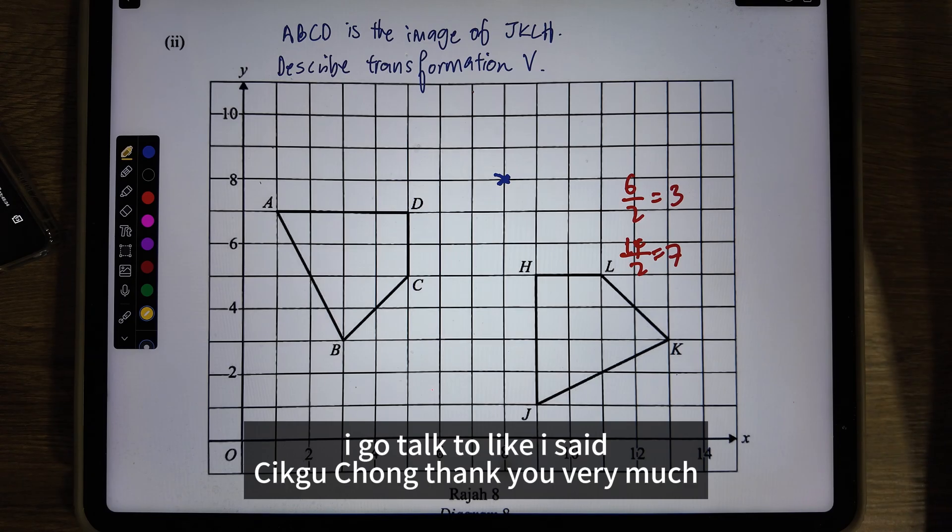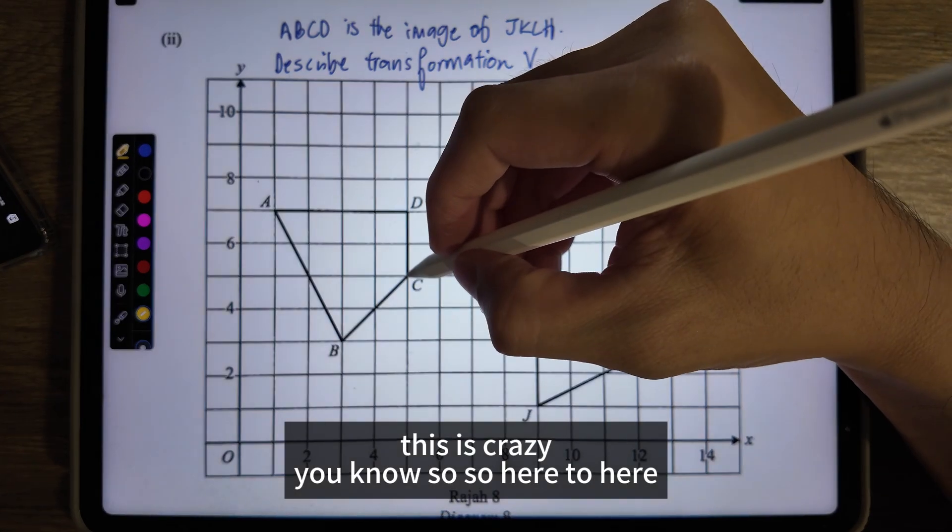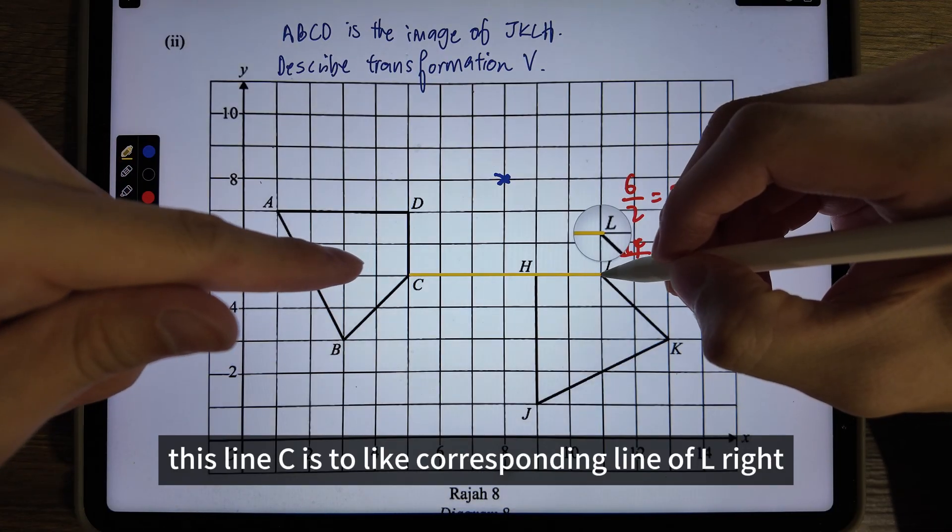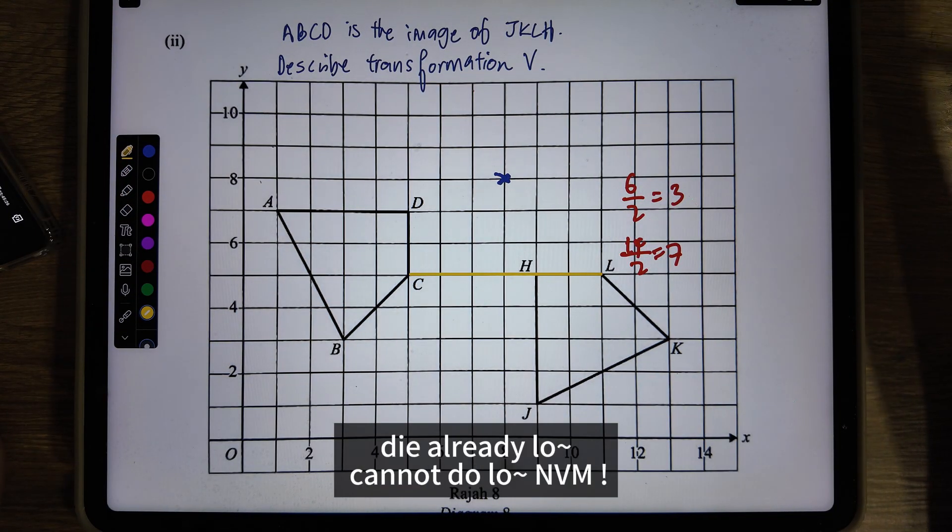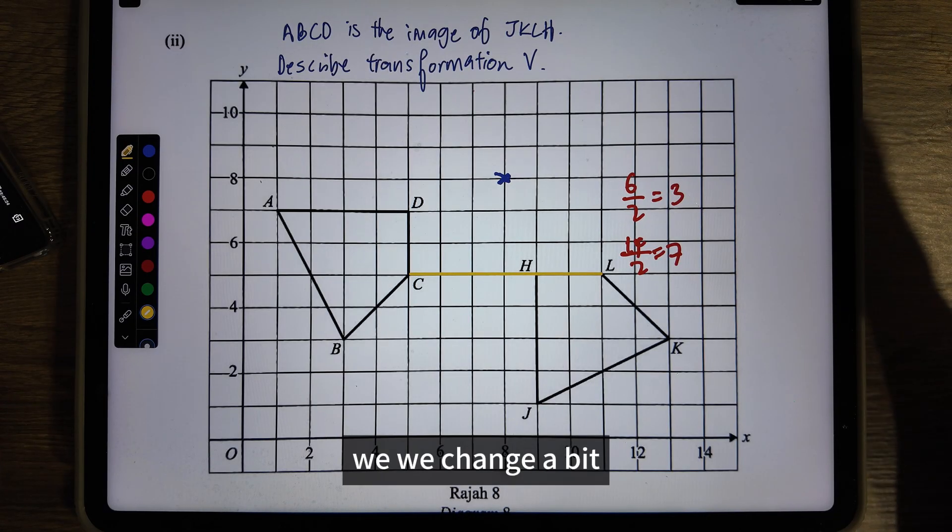But Chikgu Chong's channel didn't mention this straight line thing, so I noticed it. I'm going to talk to Chikgu Chong. This is crazy! So here to here - you see this? This line C to corresponding line L. Then you see this one - the video format is difficult. Never mind, we change a bit. We have to be innovative.